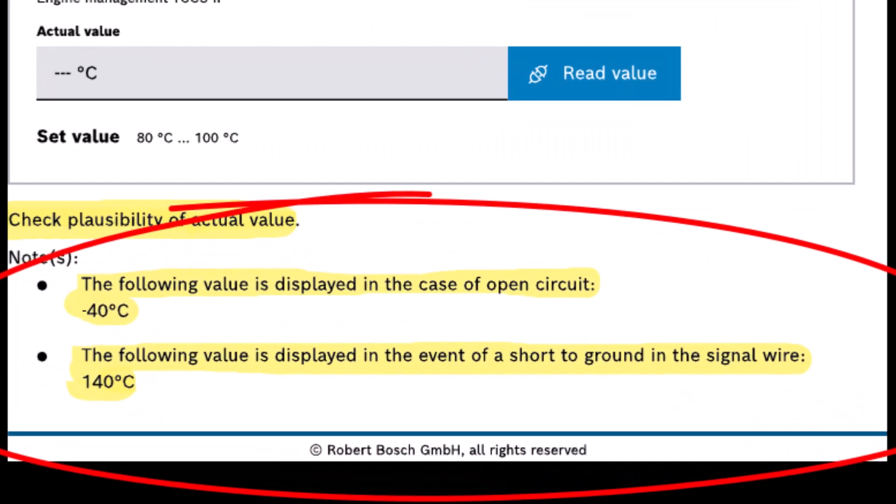Let's have a quick look at our manufacturer's data here. It says that if there's an open circuit in the coolant temperature sensor circuit, it will go to minus 40 on the actual values and it will go to 140 degrees Celsius if there is a short to ground on the signal wire. There's a lot of useful information we can gather from the live data there.